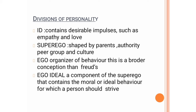According to Henry Murray, personality is divided into three parts — id, ego, and superego — which are basically similar to Freud's divisions of personality, though Murray modified these definitions. The id contains desirable impulses such as empathy and love. The superego is shaped by parents, authority, peer group, and culture. The ego is the organizer of behavior — a broader conception than Freud's. The ego ideal is a component of the superego that contains the moral or ideal behavior for which a person should strive.